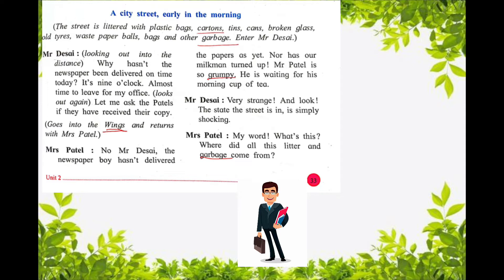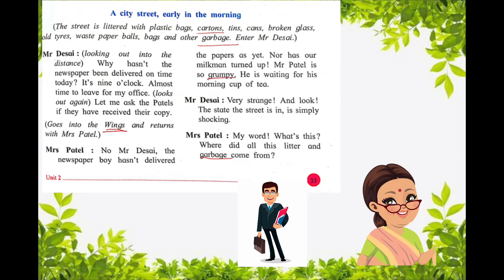Mrs. Patel said, 'No, Mr. Desai, the newspaper boy hasn't delivered the paper and nor has our milkman turned up. Mr. Patel is so grumpy.' Underline the word grumpy. Grumpy means easily annoyed or complaining. That means Mr. Patel was complaining that the newspaper had not come and the milkman had not turned up. He was waiting for his morning cup of tea, but both things had not arrived, so he was very grumpy and annoyed.